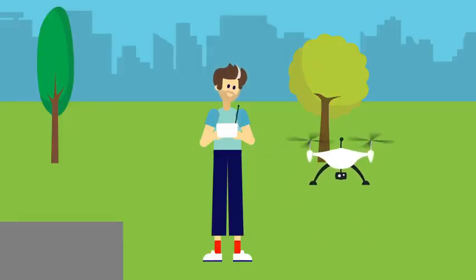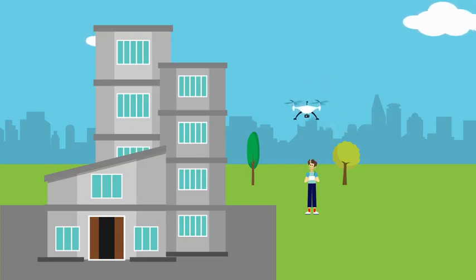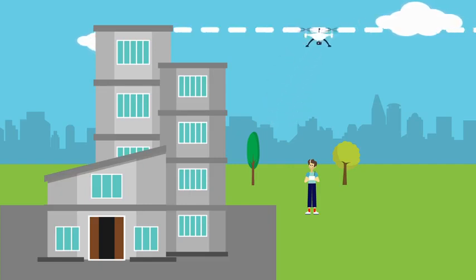But there is a way you can fly your drone safely without that clearance. It's by doing what's called a shielded operation. That means you fly your drone near and below the height of an object that shields your drone from other aircraft.